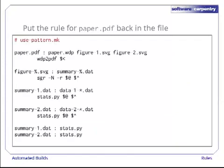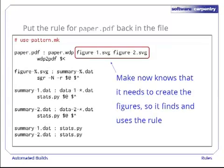Let's do this by putting the rule for paper.pdf back in our MAKE file. Here's the full MAKE file. In it, paper.pdf depends on figure1.svg and figure2.svg. MAKE now knows that it needs these figures. Since there aren't specific rules for them, it uses the pattern rule instead.